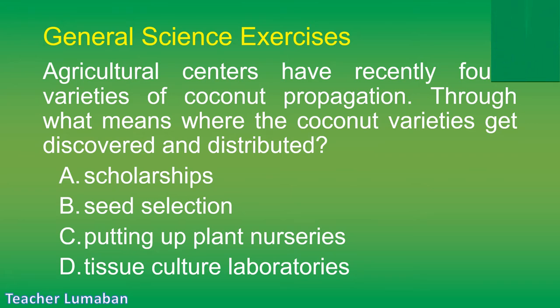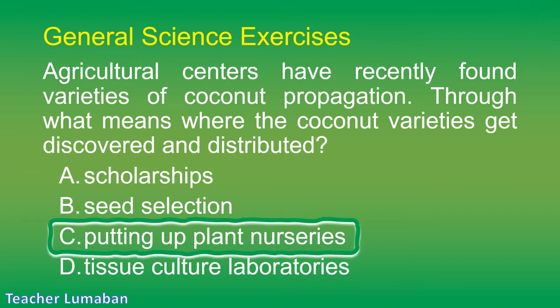The correct answer is Letter C: putting up plant nurseries. Agricultural centers have recently found varieties of coconut propagation through putting up plant nurseries.